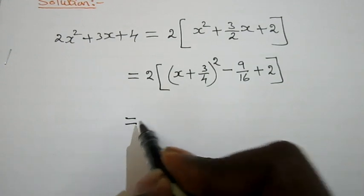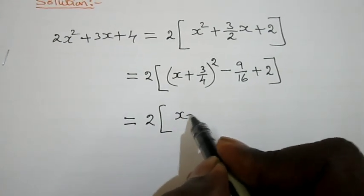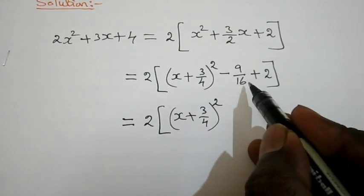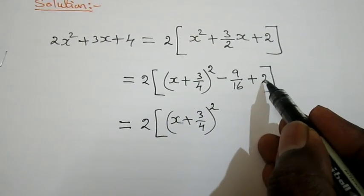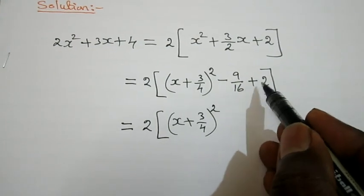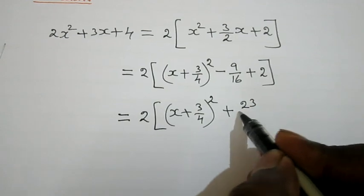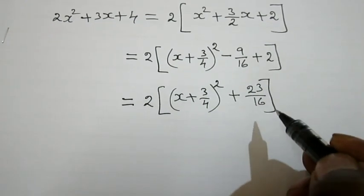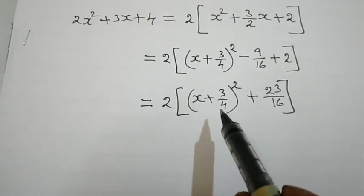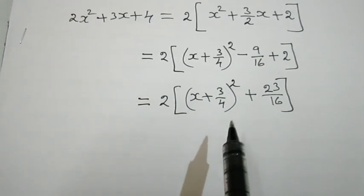Simplifying: this equals 2 into x plus 3 by 4, the whole square, plus 23 by 16. Here 16 times 2 is 32, and 32 minus 9 is 23. This is the equivalent quadratic form.